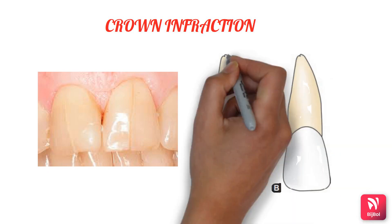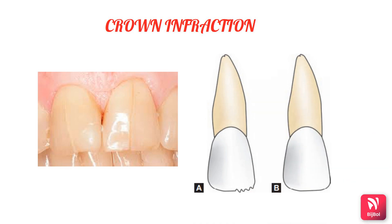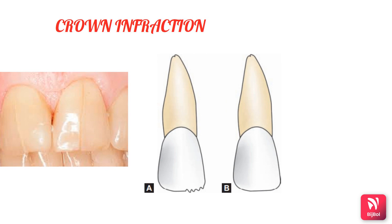For crown infraction, smoothing of rough edges by selective grinding of the enamel will clear the craze lines. If there is a fracture of the tooth surface, composite is needed for cosmetic procedures.